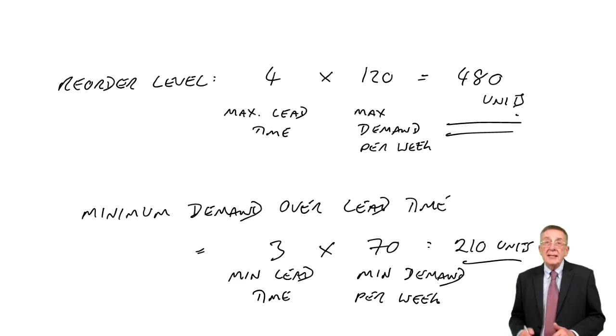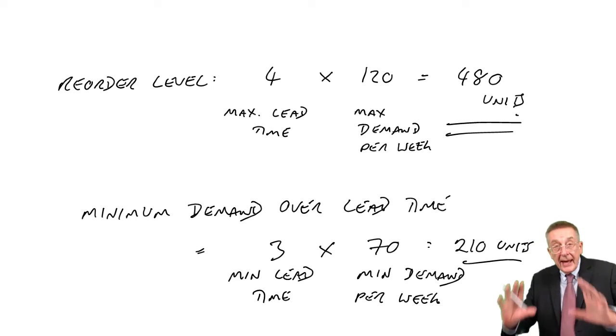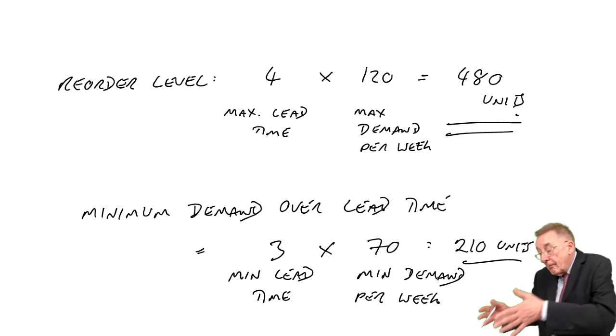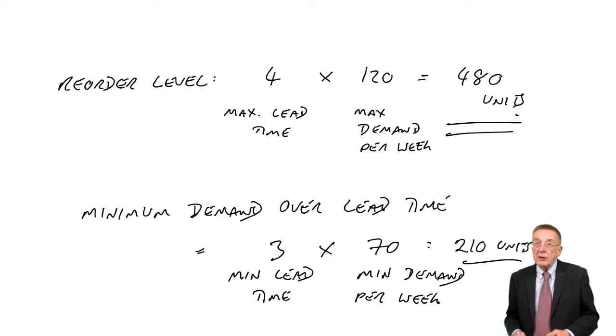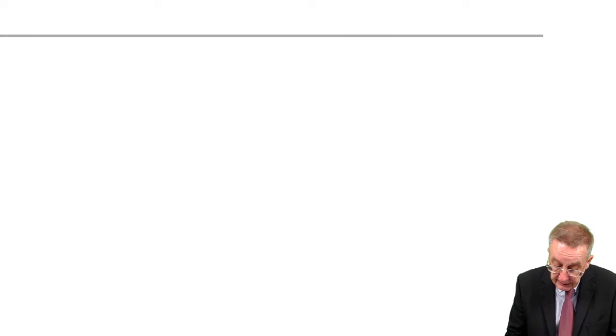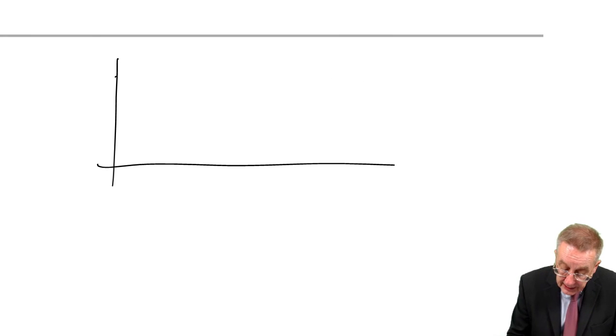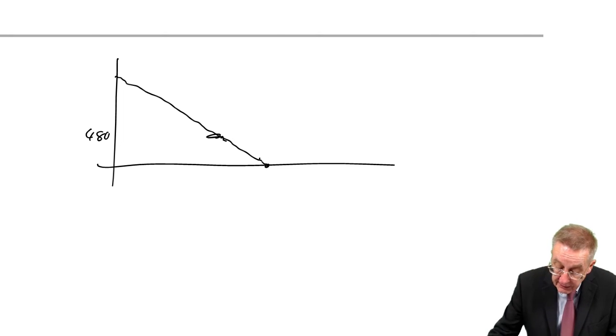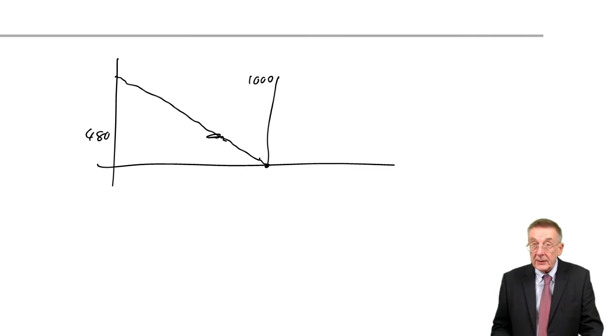Now think about this. If you reorder when you're 480 left, if they demand 480, then when the new order arrives, the level would drop to zero. Make it more clear. We reorder when we've still 480 left. Sometimes we will need all 480, drops to zero, and then the new order comes in of a thousand.